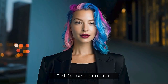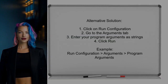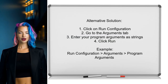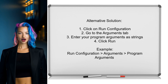Let's see another perspective. An alternative approach shared by a user involves using the Run Configuration feature in Eclipse. First, click on Run Configuration, then navigate to the Arguments tab. Here, you can enter your program arguments as strings. Finally, click on Run to execute your commands.